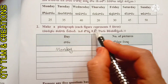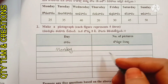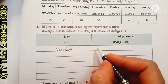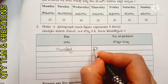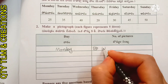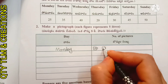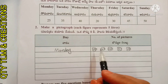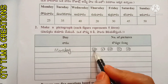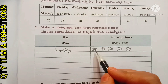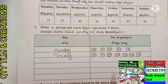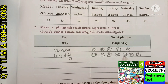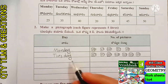Monday is 25 liters. Each figure represents five liters, so we draw five pictures for Monday — five fives are 25. Tuesday is 35 liters, so we draw seven pictures — seven fives are 35. Wednesday is 40 liters, so we draw eight pictures of five liters each.